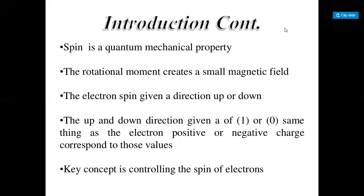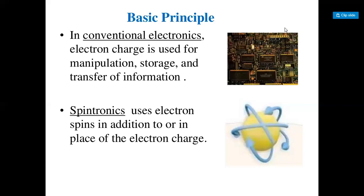Rotational movement creates a small magnetic field. The electron spin gives a direction up and down. As seen in the previous slide, the up and down direction corresponds to 1 or 0. Similarly, the electron positive or negative charge corresponds to those values. The key concept is controlling the spin of an electron — this is the basic principle.